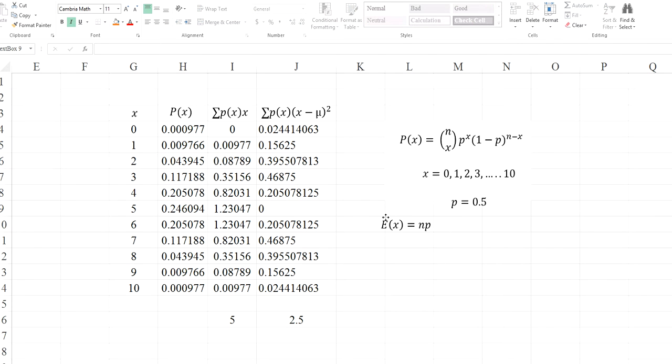However, in case of the binomial distribution, there is a shortcut. You can use this formula. EX is called the expected value of the distribution, which is also the mean of the probability distribution. n times P. And P is 0.5, n is 10. 0.5 times 10 is equal to 5. And the variance can be calculated by using this formula. I leave it up to you to verify that when you compute this formula, you can get 2.5.